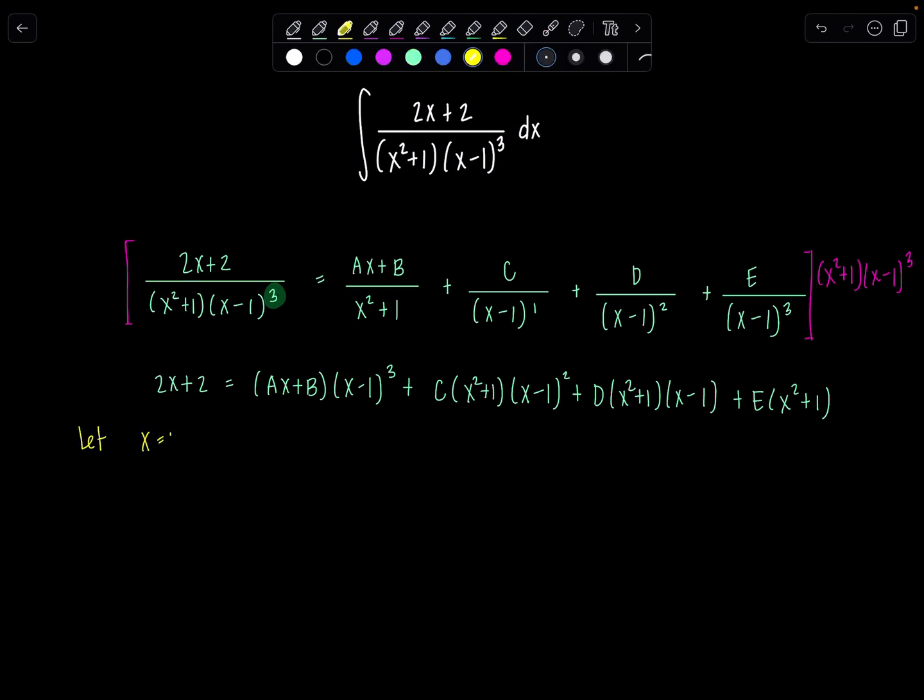I'm going to let x equal 1. And then now we have 2 times 1 plus 2. So that's 4 on the left-hand side equals 0 plus 0 plus 0 plus e times 1 squared plus 1 is 2. So 4 equals 2e. Boom. Now I know e is 2. However, at the moment, there's nothing else that I could substitute in for x to solve for the rest of the constants because x squared plus 1 is an irreducible quadratic and its zeros are imaginary.